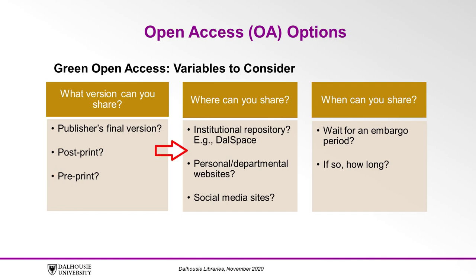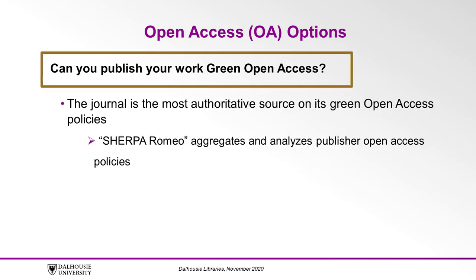Where can you share? Sometimes sharing is only allowed in certain venues, such as institutional repositories like Dalspace, and forbidden in others, such as websites or social media sites including ResearchGate. When can you share? Are you allowed to share your work in a repository right away, or must you wait for an embargo period to pass? The journal itself is the most authoritative source for its green open access policies, but a shortcut is available through a database called Sherpa Romeo, which can be found in the description below.